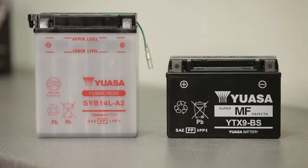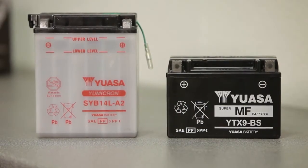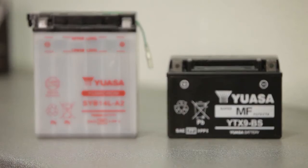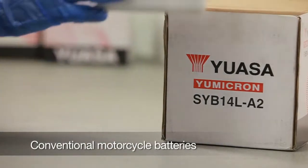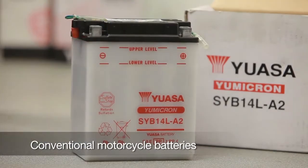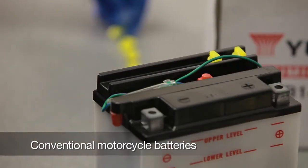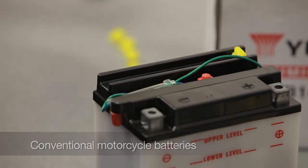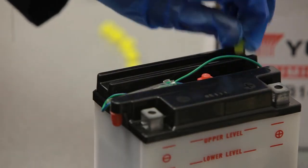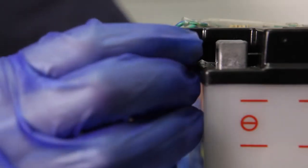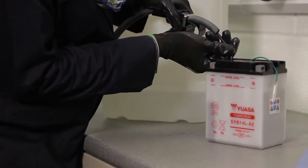As the procedures used to charge each type of battery are different, always check which type of battery you're dealing with before you begin. To charge a conventional battery, place it on a level surface, then remove the filler caps, placing them safely to one side. Remove the sealing cap from the vent and throw it away. Never replace this after the battery has been filled with electrolyte as it may cause the battery to rupture.